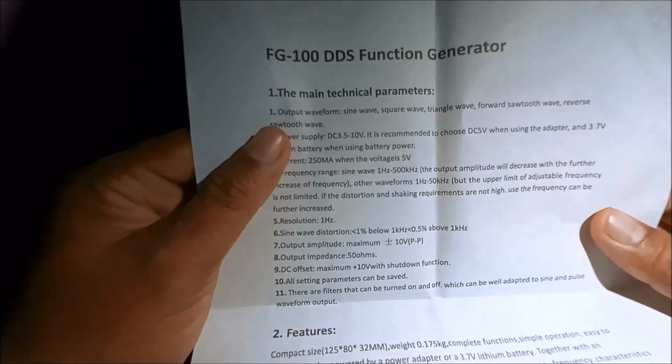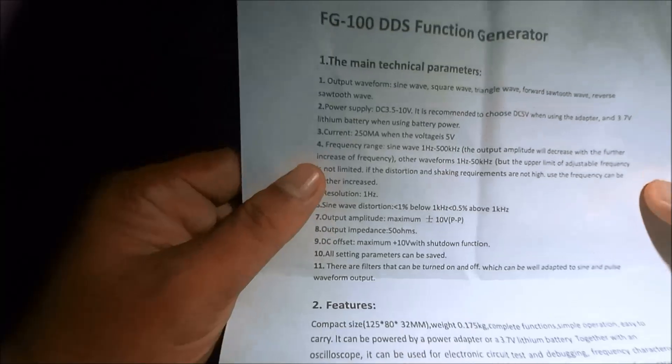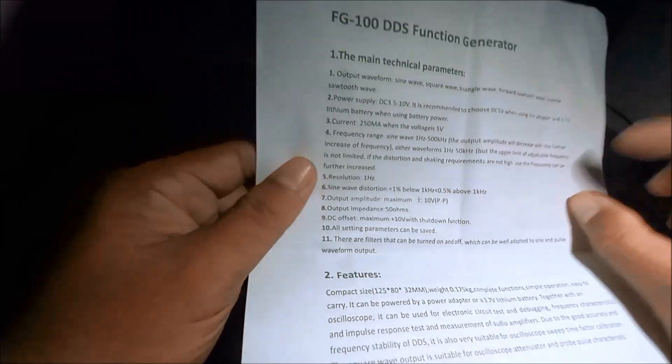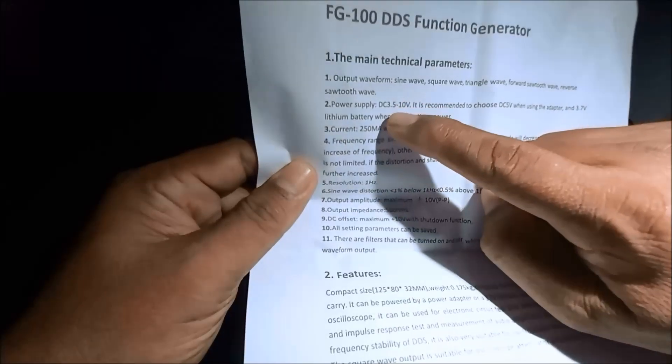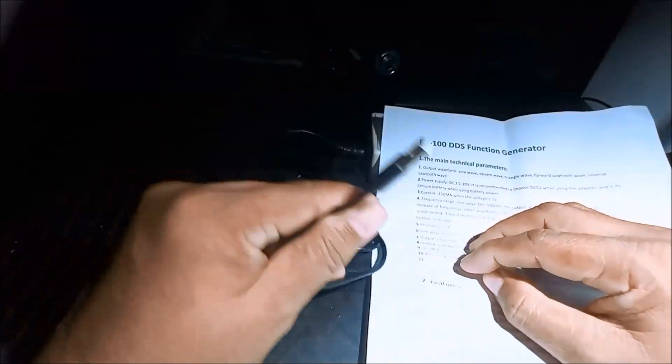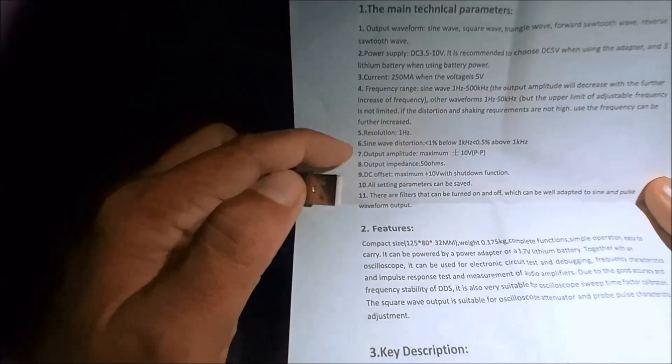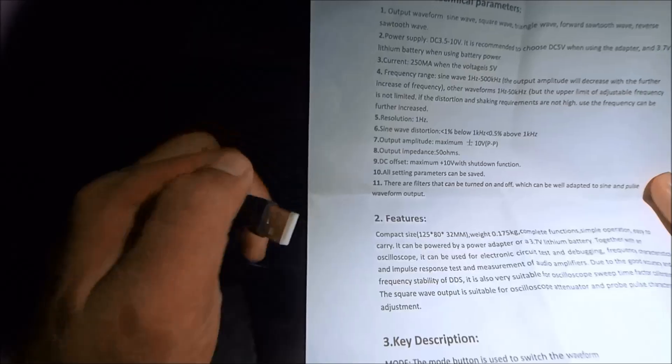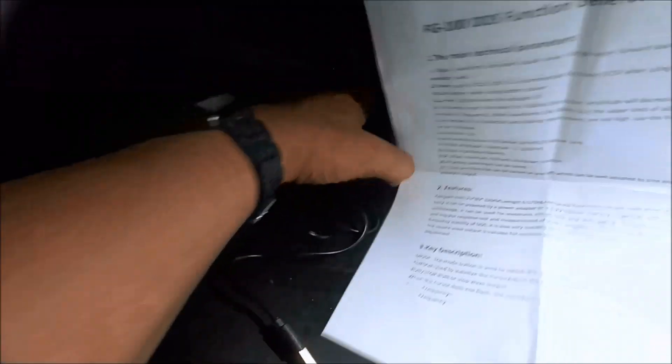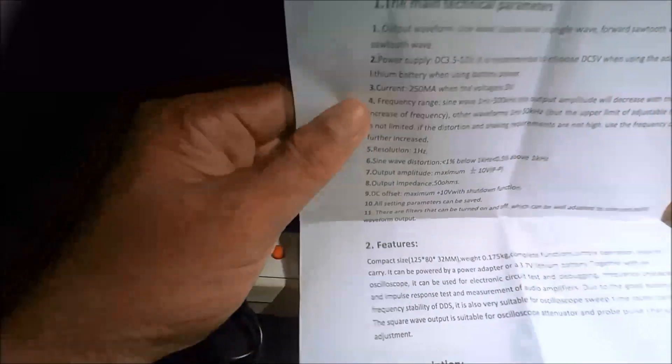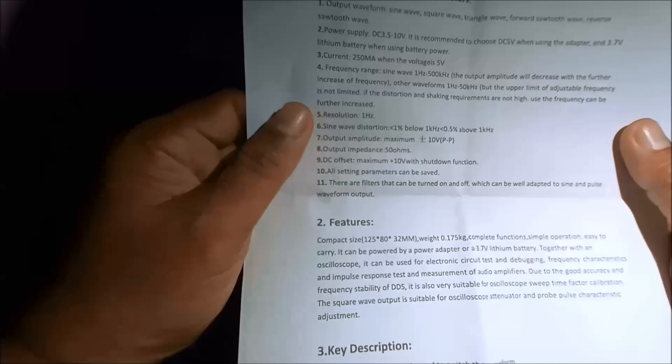The outputting waveforms: sine wave, square wave, triangular, sawtooth forward, reverse. We can use 3.5 to 10 volts or 5 volts. So it has a frequency range of 1 hertz to 500 kilohertz.